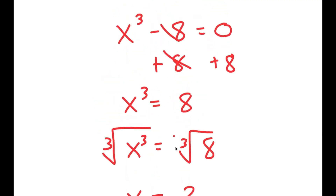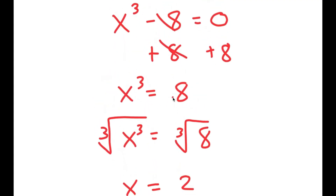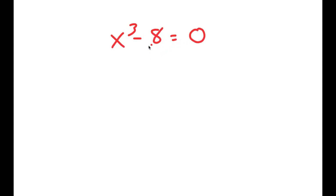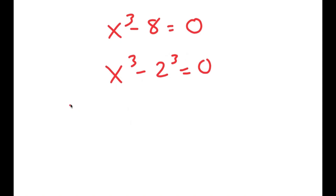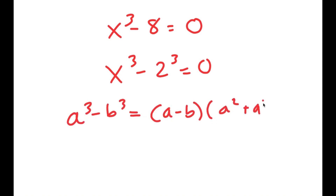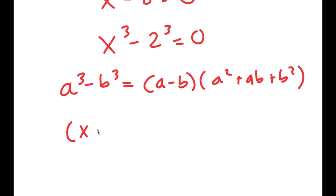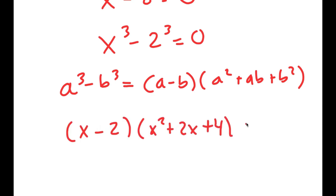Actually, there are more than one solution to this equation. I'll rewrite x^3 minus 8 equals 0 by writing 8 as 2^3, giving x^3 minus 2^3 equals 0. Now I'll use the difference of cubes formula: a^3 minus b^3 equals (a minus b)(a² plus ab plus b²). This turns into (x minus 2)(x² plus 2x plus 4) equals 0.